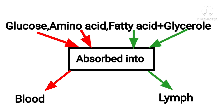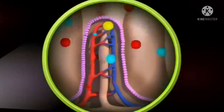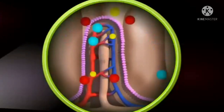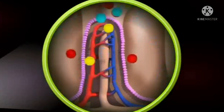Fatty acids and glycerols, which are the simple forms of fat, are absorbed into the lymph. Absorption of 90% of water also takes place through the villi.